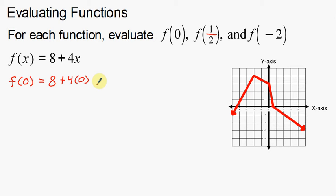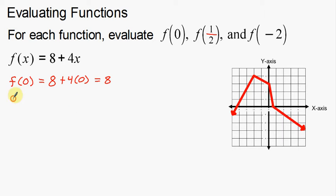The basic concept of function notation is just: plug in these numbers. So after eight plus four times zero — four times zero is zero — plus eight is just going to be eight. Very simple. We're just evaluating, just figuring this out, plugging in the numbers and seeing what we come up with.